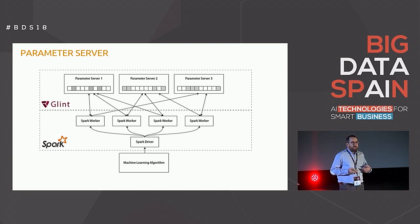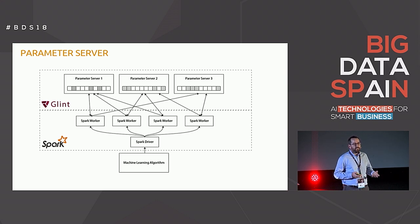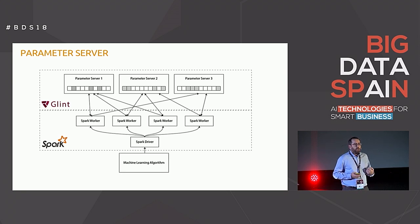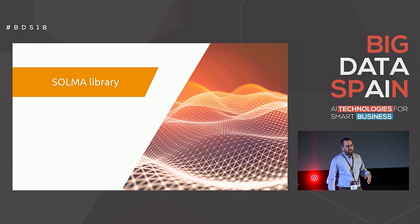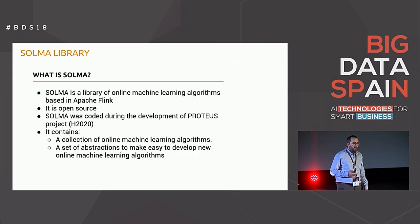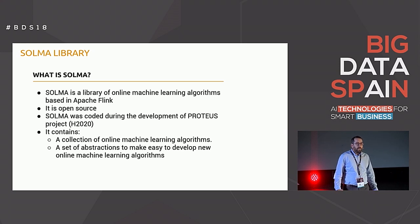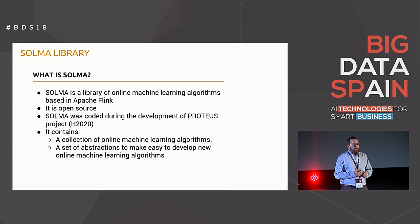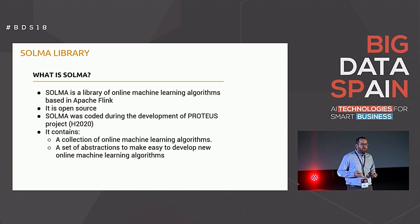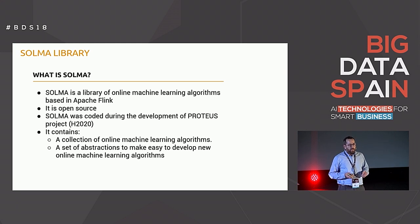Once we know what scalable online machine learning is and the challenges we need to tackle, I will introduce a library that tries to solve this problem: the Solma library. Solma is an open-source library of online machine learning algorithms. It was developed during a European research project. It contains two important things: a collection of online machine learning algorithms, and a set of abstractions to make it easy to develop new algorithms with this premise.